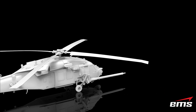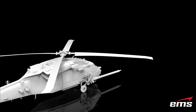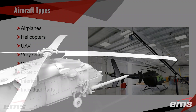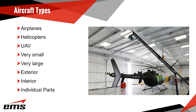Unmanned aircraft as well, and again they can be very small or very large and all points in between. Sometimes just the exterior needs to be scanned, sometimes the interior, sometimes both, or just individual parts on the aircraft.